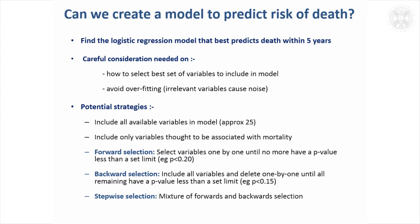There are also mixtures of forward and backward selection, sometimes called stepwise selection, where you add variables and then remove any whose p-value becomes too large, going back and forth until you reach a final model. None of these is definitively the best way. The choice depends on how many variables you have — with few variables, you might include them all or use backward selection; with a huge number, forward selection may be more sensible.